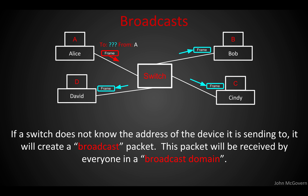What if a switch doesn't know the address yet — maybe it hasn't seen that device transmit before? All it'll do is take the packet and broadcast it out. Computers themselves can also send broadcast packets. All we're saying is: if the switch doesn't know where the destination is, it floods the packet out to all of its ports minus the port it received traffic from. When a broadcast is sent out, the grouping of devices that will hear that broadcast packet is called a broadcast domain — what group of computers will receive any given broadcast.